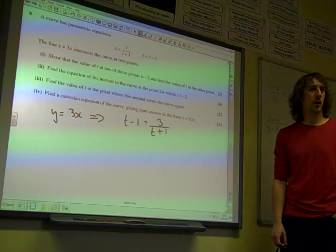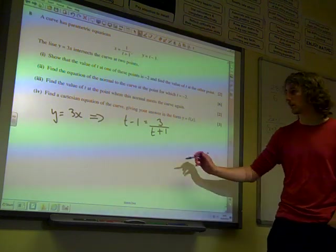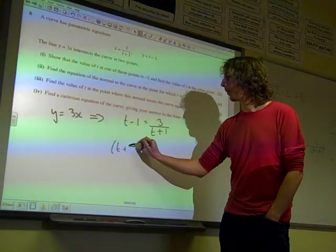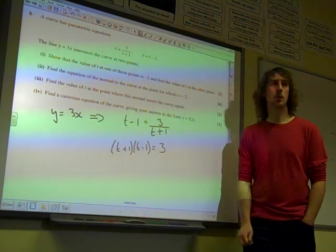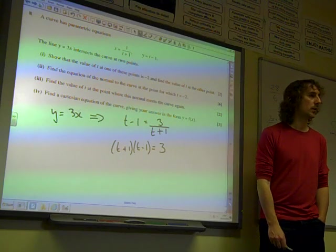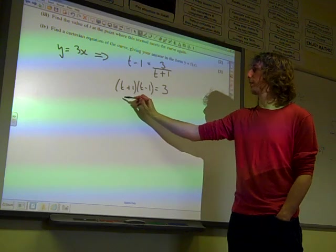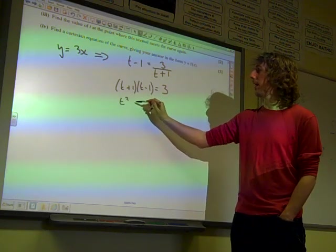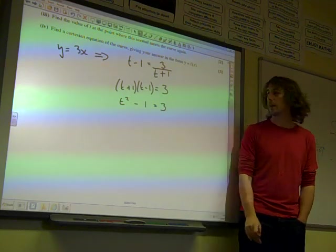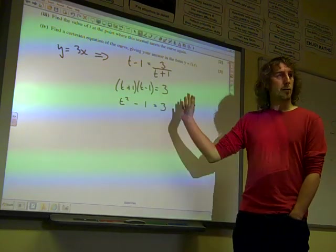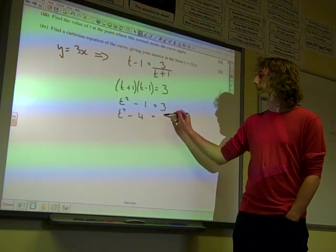I want to get all of the unknowns together. I want to multiply both sides by t plus 1. So t plus 1 times t minus 1 equals 3. It's really nice how this is all falling together now. t squared minus 1 is 3, because that's the difference of two squares. Bring the 3 over to join it. We've got t squared minus 4 equals 0.